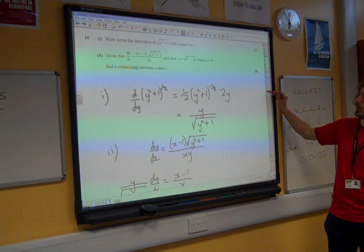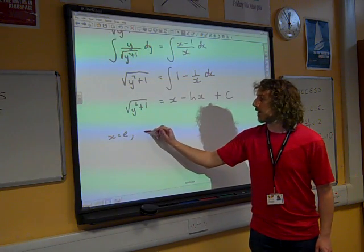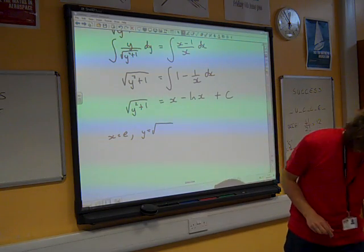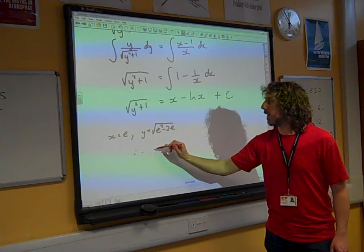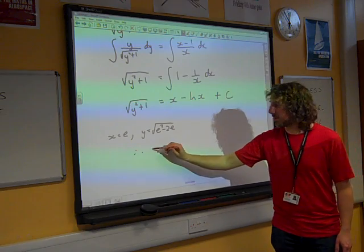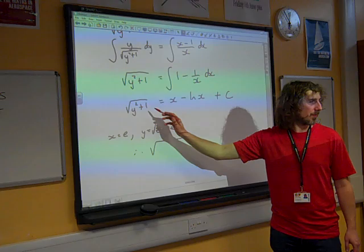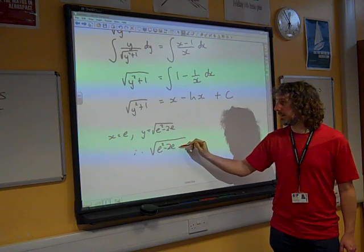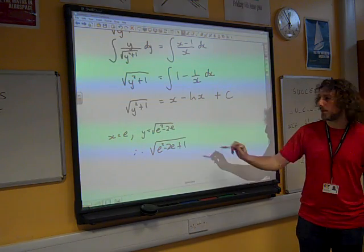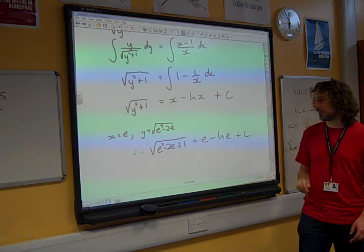What we've got, y is root e squared minus 2e when x is e. It's a bit unpleasant. So if x is e, y is root, what did it just say? e squared minus 2e. In other words, the square root of y squared plus 1. Well, if y is that, then y squared is e squared minus 2e plus 1 equals x, which is e, minus the natural log of e plus c.